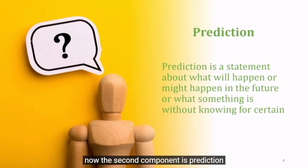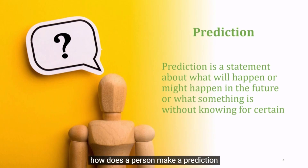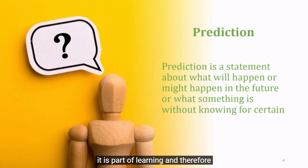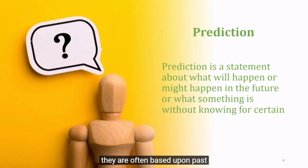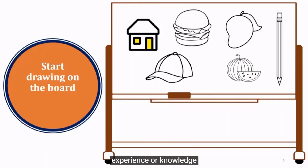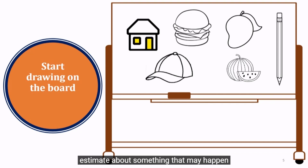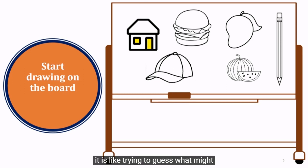The second component is prediction. What does prediction mean? How does a person make a prediction? Predictions are often made based on prior knowledge — it is part of learning and therefore intelligence. They are often based upon past experience or knowledge. Prediction is when we make a guess or estimate about something that may happen in the future based on the information we have. It is like trying to guess what might occur next.